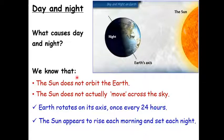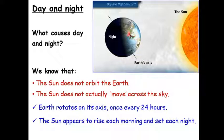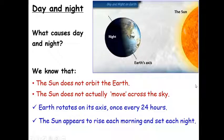The sun appears to rise each morning as the part of the Earth you're on rotates into the half that is in the light — that's sunrise. Then throughout the day your location rotates around and eventually moves out of the sun's light, and that is sunset when it becomes nighttime.